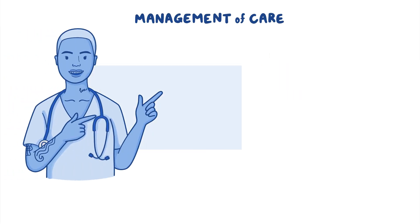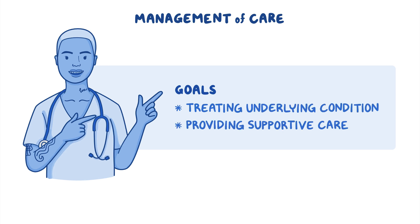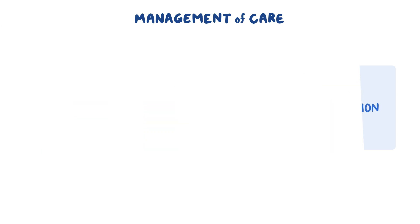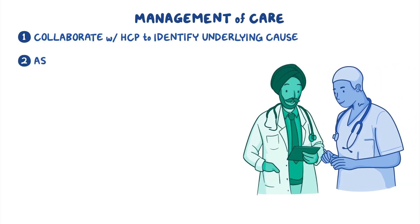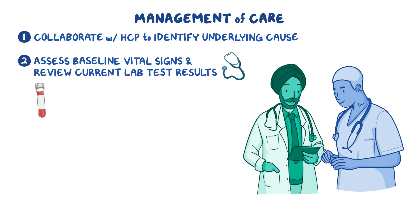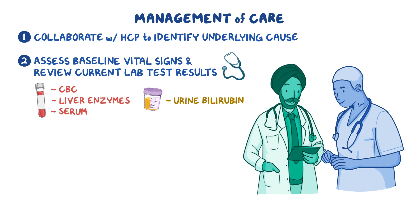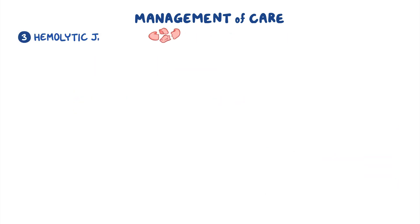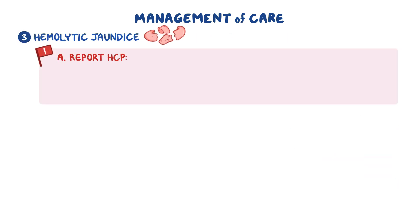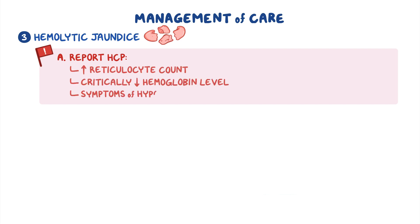Now let's look at the nursing care for a client with jaundice. The goals of care center on treating the underlying condition and providing supportive care. Begin by collaborating with the healthcare provider to identify the underlying cause. Then assess your client's baseline vital signs and review their current laboratory test results, including CBC, liver enzymes, serum, and urine bilirubin. If your client is diagnosed with hemolytic jaundice, report to the healthcare provider a rising reticulocyte count, a critically low hemoglobin level, and symptoms of hypoxemia.